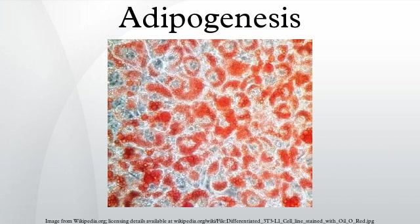In vitro, the transition of fibroblast cells to mature adipocytes is one of the best characterized processes of cellular differentiation. Primary preadipocyte cells can be isolated from the stromal vascular fraction of adipose tissue, and when treated in cell culture with a combination of adipogenic effectors, they can differentiate into adipocytes.